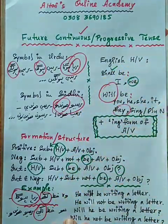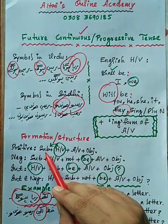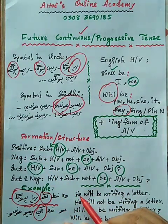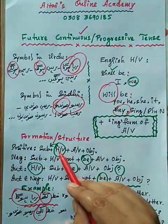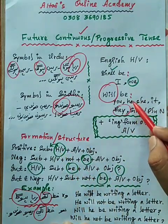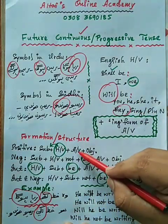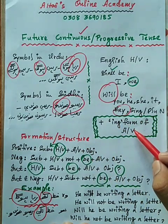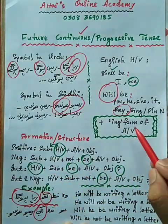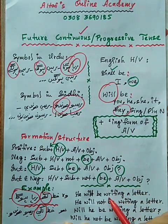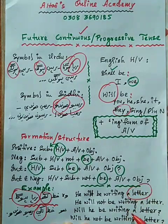Now it's time to convert the sentence into English. The sentence is positive, so first we put the subject: 'vo' or 'hu' in Urdu becomes 'he' in English. Positive sentence: subject 'he', then helping verb — with 'he' we use 'will be'. So: 'He will be', then the action verb in -ing form. 'Likhna' in English is 'write', so in -ing form it becomes 'writing'. Finally the object: 'khat' is 'a letter'. Sentence: He will be writing a letter.